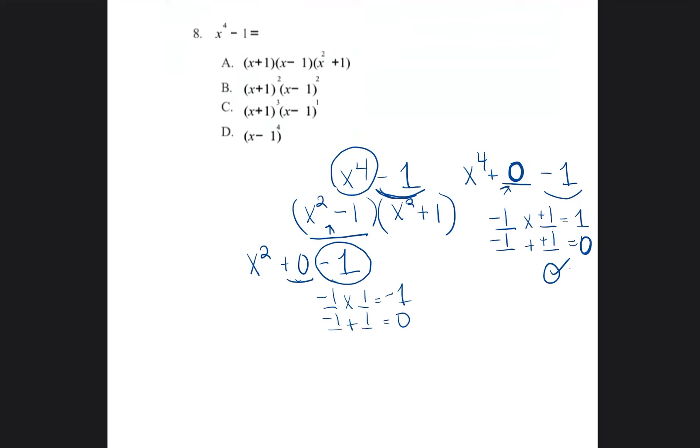To break down x squared minus one, we put negative one here, positive one there. And to break down the x squared, it's just x and x. All right, we were able to break this down.